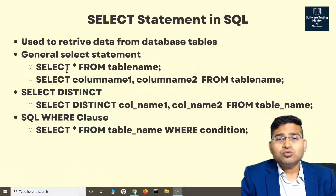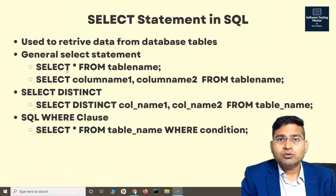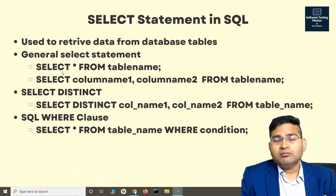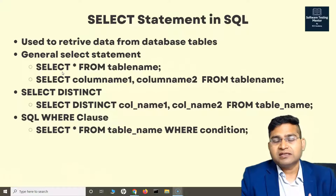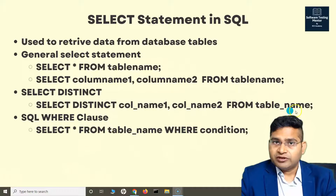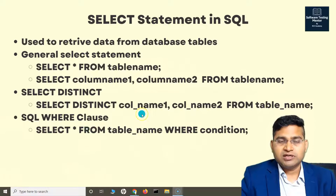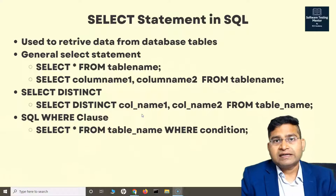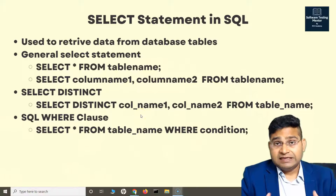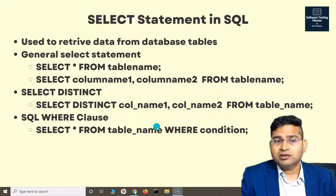Many times I want to filter only distinct values from a table. SELECT DISTINCT helps us select unique values from a column. For example, if the city column has 'New Delhi' repeated for many rows and I only want unique cities, I can say SELECT DISTINCT city FROM table_name. We also have the WHERE clause, which lets us specify a condition — if that condition is true, it returns the matching values.